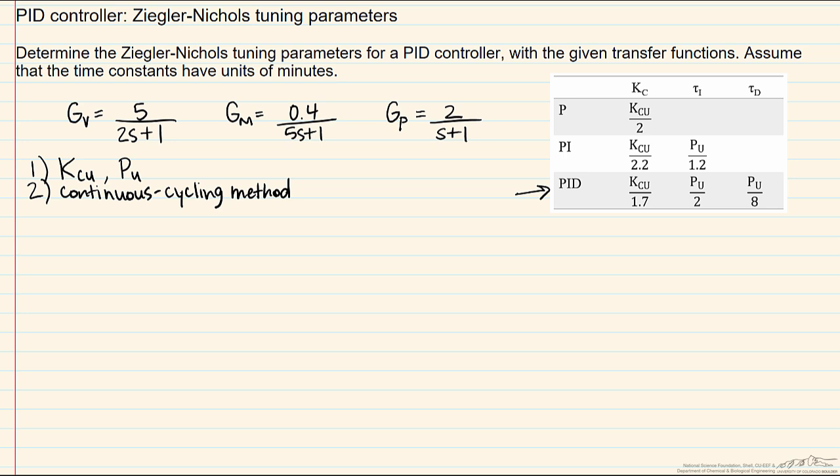If the transfer functions are known we can find kcu and pu, the ultimate gain and ultimate period, via the method of direct substitution. So that is what we are going to take advantage of in this situation.